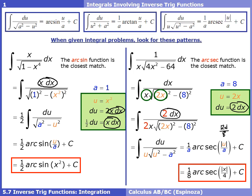Plugging u equals 2x and dividing by a equals 8, we simplify 2 over 8 to get absolute value of x over 4. The final answer is one-eighth arcsecant of the absolute value of x over 4, plus C.